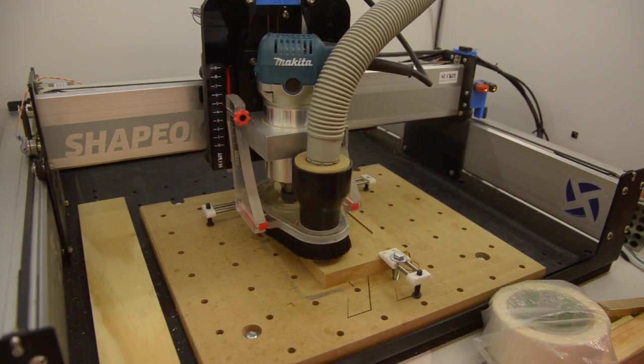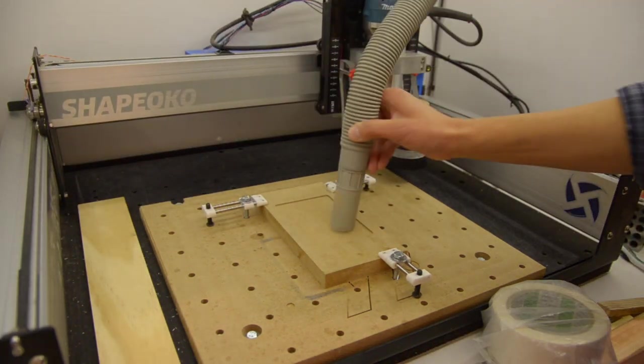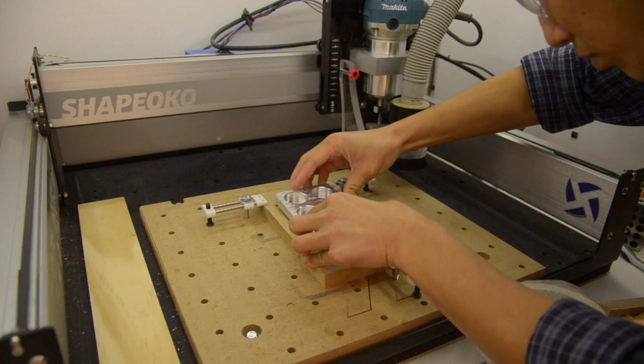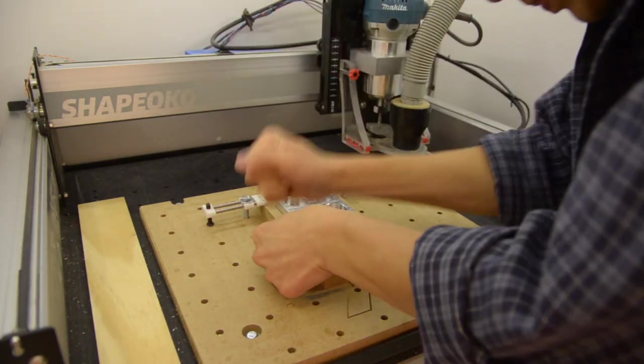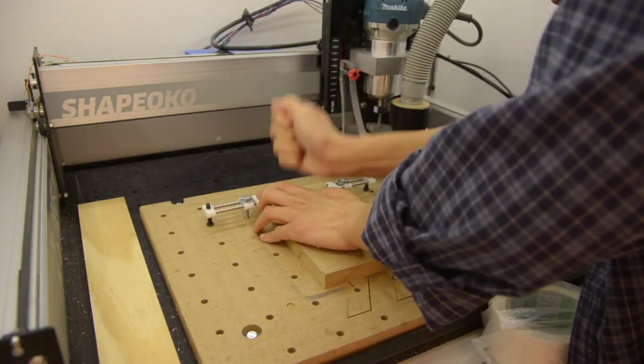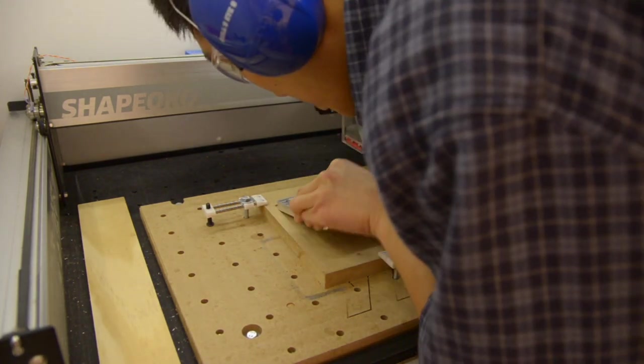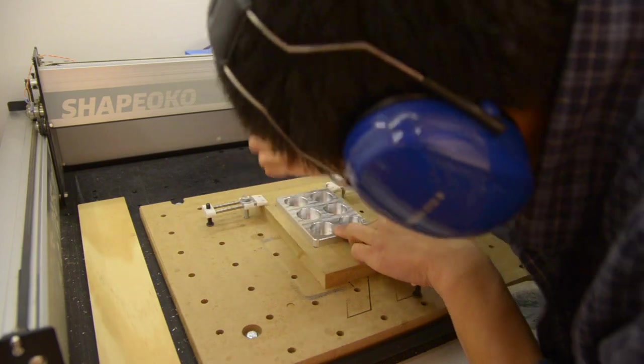Another method would be to machine a pocket in my wasteboard so that my stock would sit snugly within it. By knowing the position of the pocket, you know the position of your stock. That's what I did in my last video where I machined an aluminum tray. However, doing this requires that your parts outer dimensions be known exactly and I didn't feel like machining my stock into a perfect rectangular block.